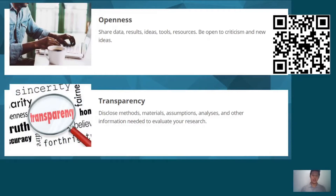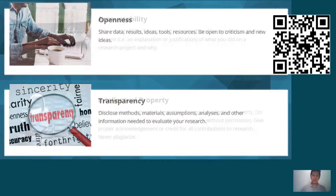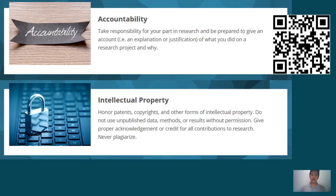Next is openness — share data, results, ideas, tools, and resources, and be open to criticism and new ideas. Then we have transparency — disclose methods, materials, assumptions, analysis, and other information needed to evaluate your research. Then we have accountability — take responsibility for your part in research and be prepared to give an account of what you did and why. Be truthful in disclosing all necessary information and justify all processes and methods you adopted.